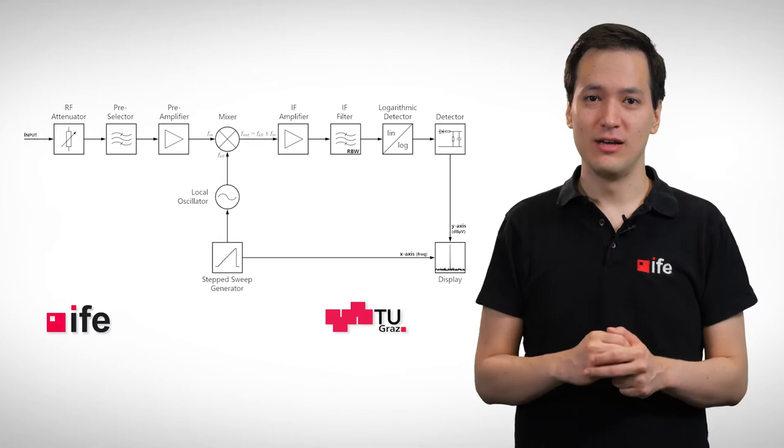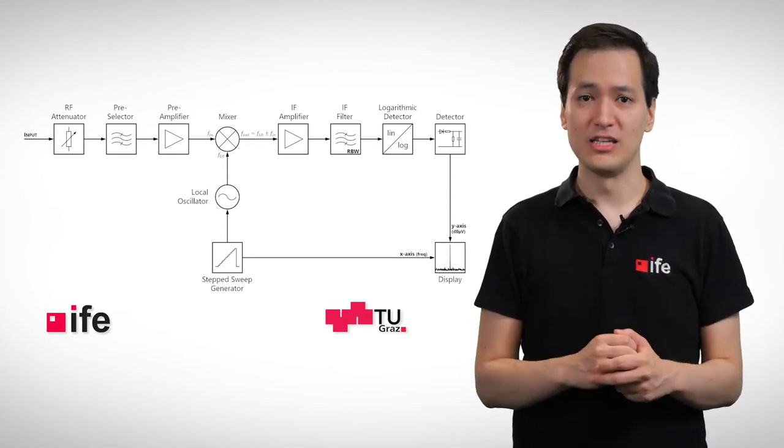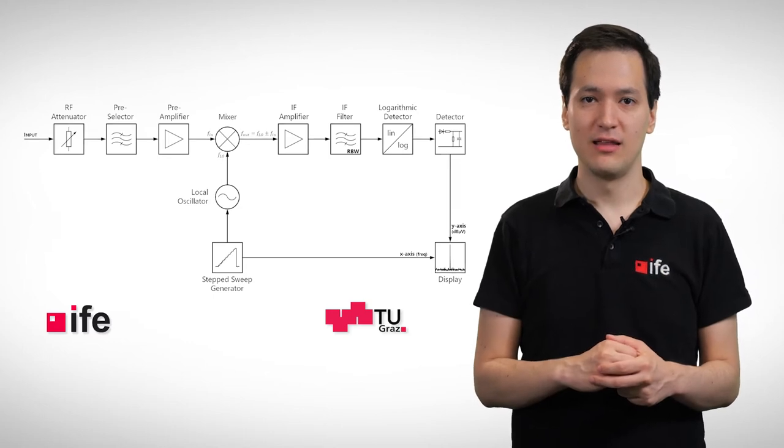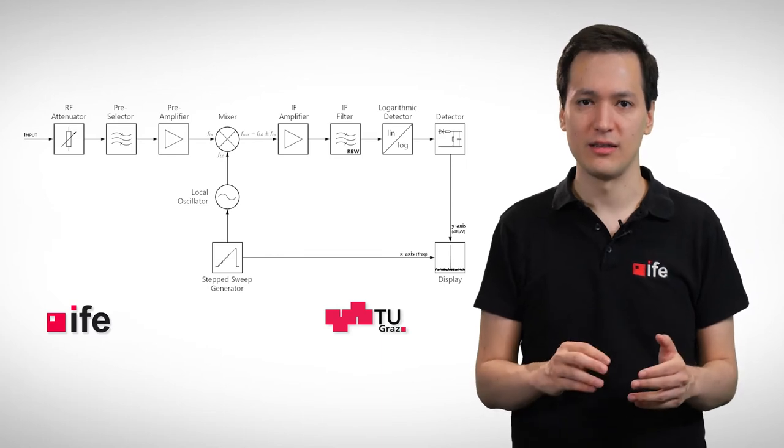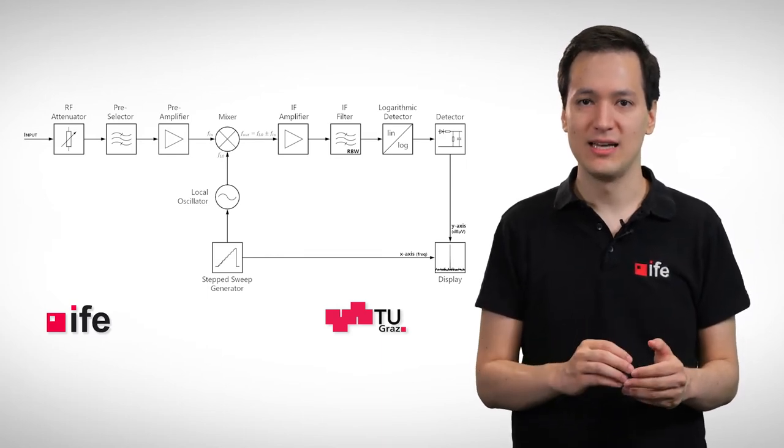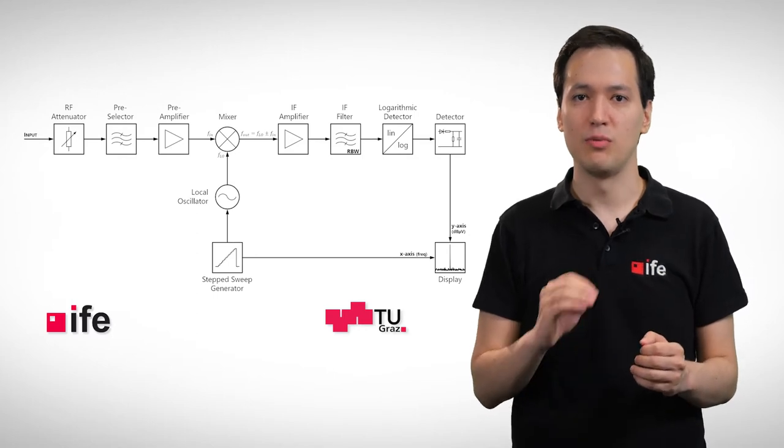As shown so far, the basic principle seems quite simple. However, as shown on a previous slide, the block diagram of an EMI receiver seems to be a little bit more complicated. With the following slides, I want to explain the importance of each of the blocks.